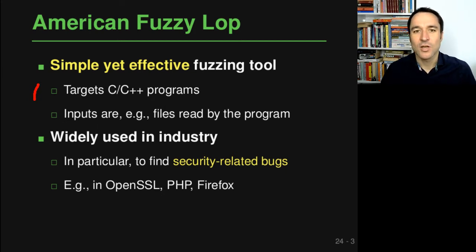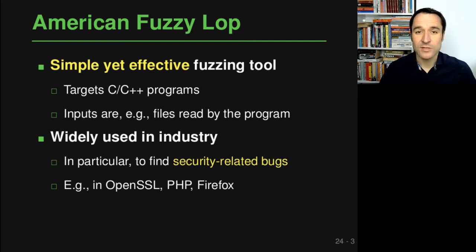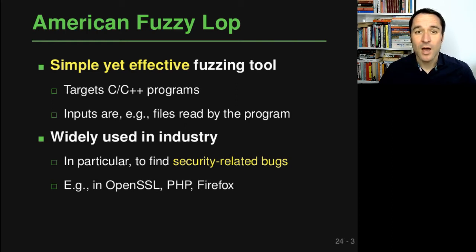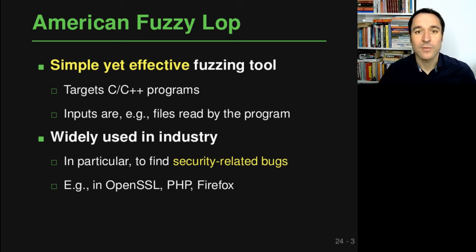AFL is widely used in industry. It has been supported by Google for a couple of years, and Google and other companies use it to find many security-related bugs. In particular, it has been used to find bugs in open source software such as OpenSSL, PHP, Firefox, and many others. By now, AFL has found hundreds of security-critical bugs in these programs, which have likely prevented many attacks that otherwise could have happened.